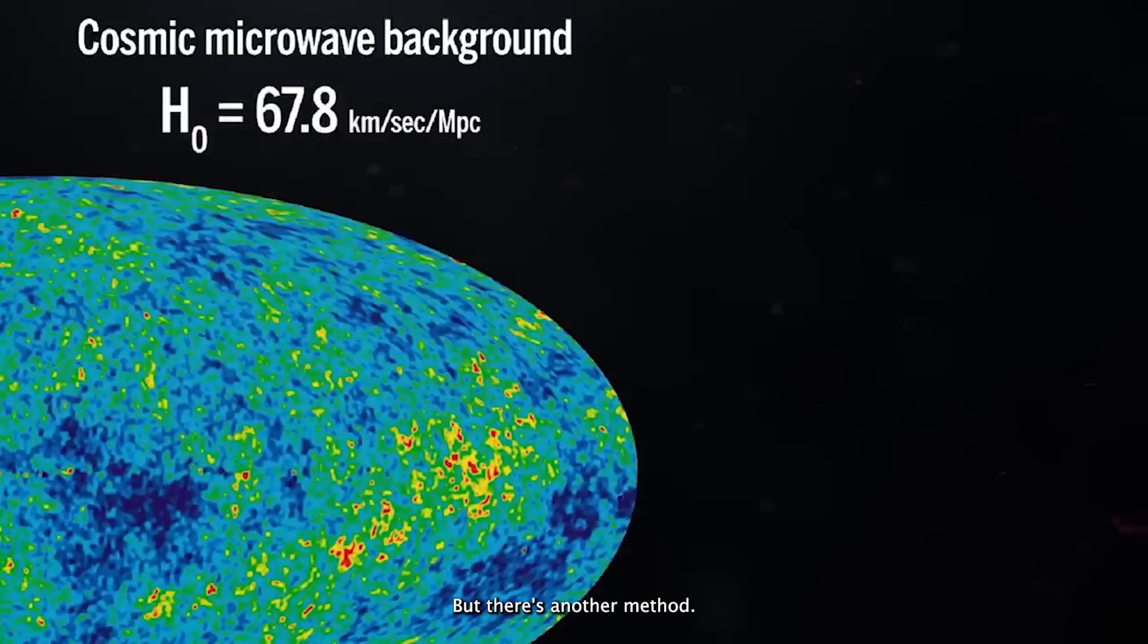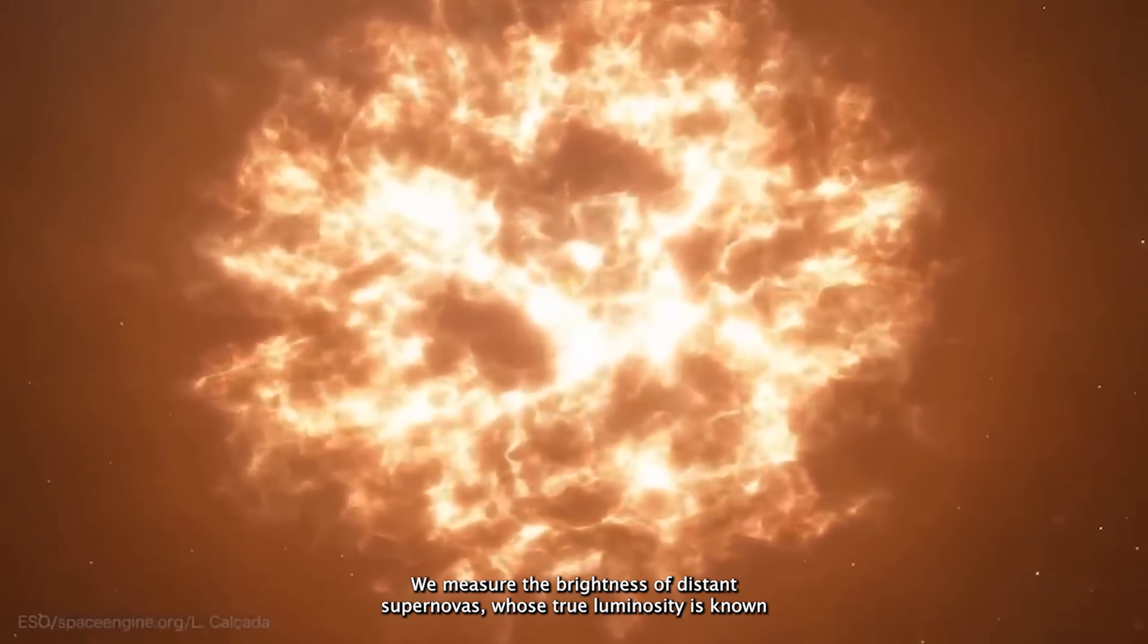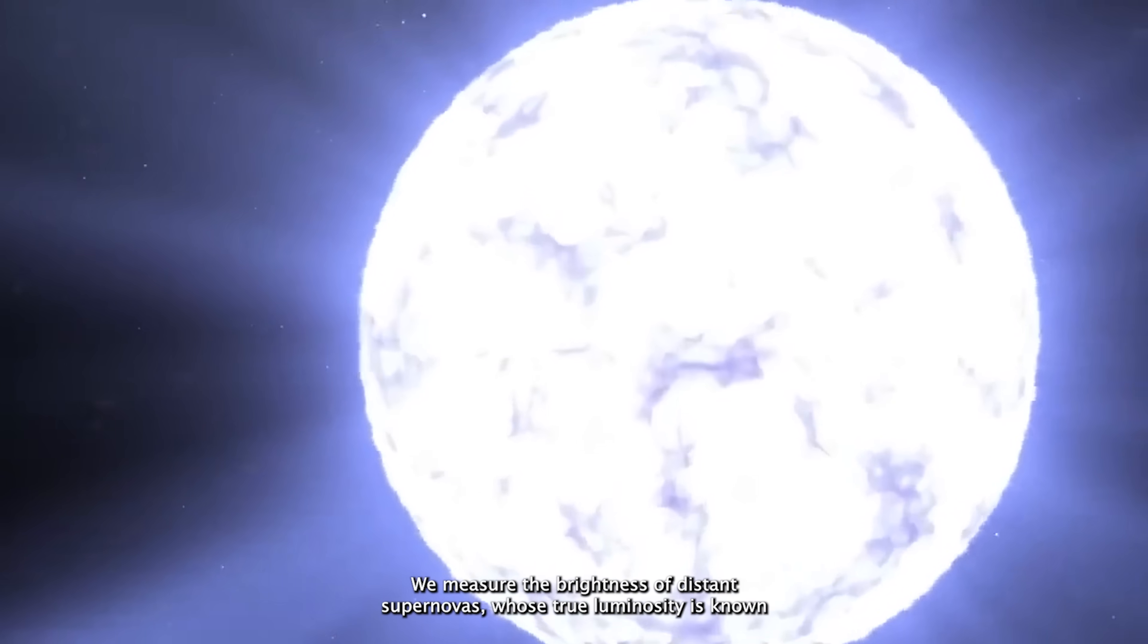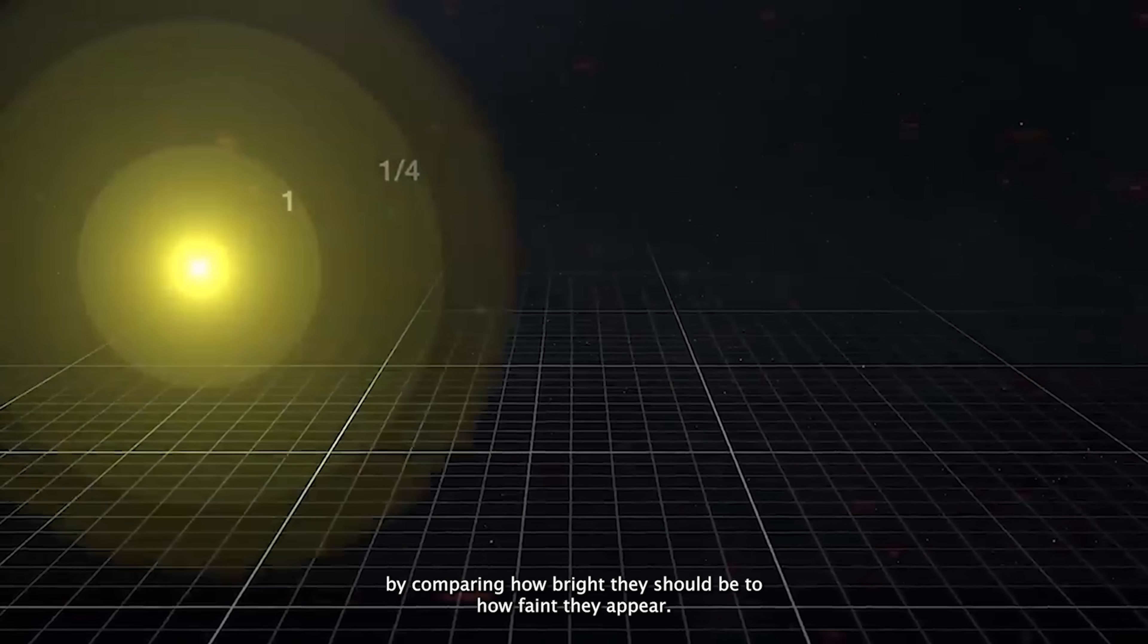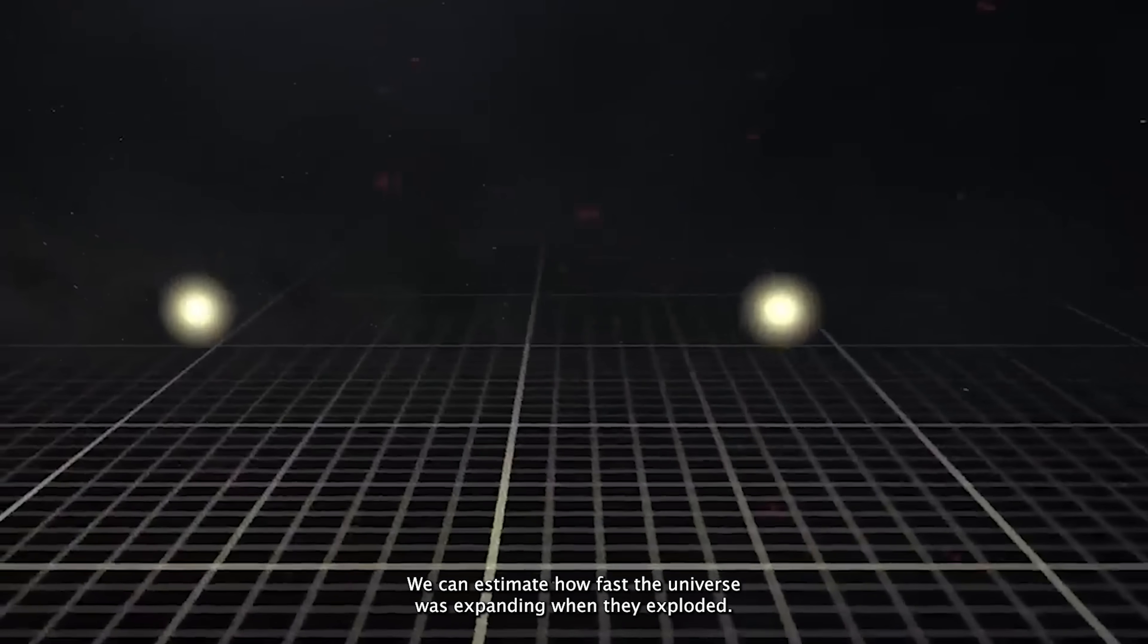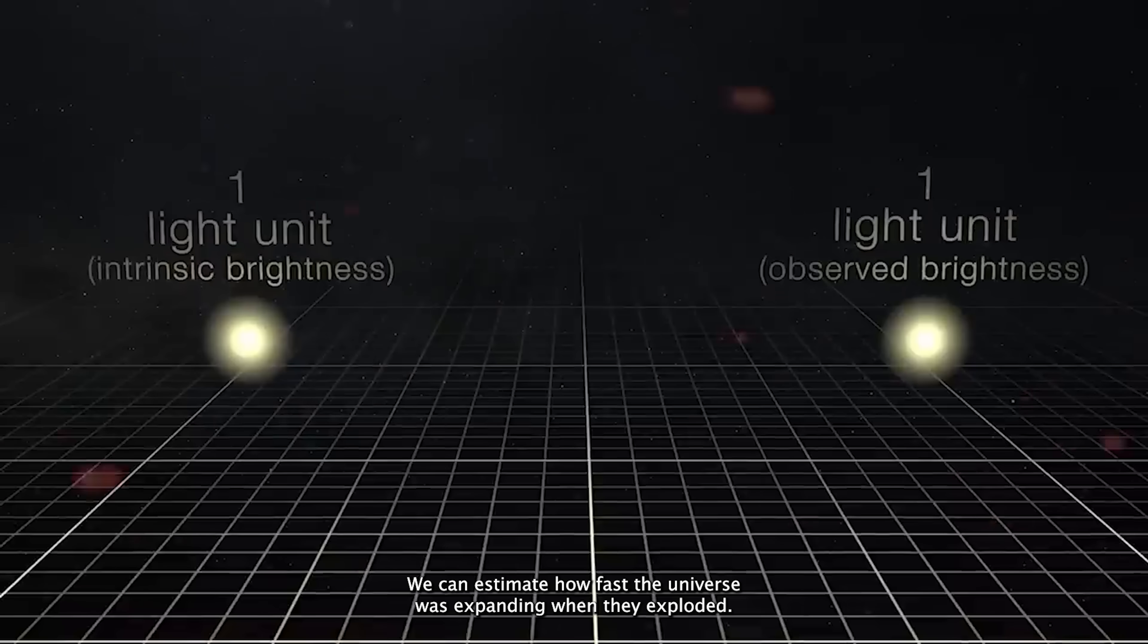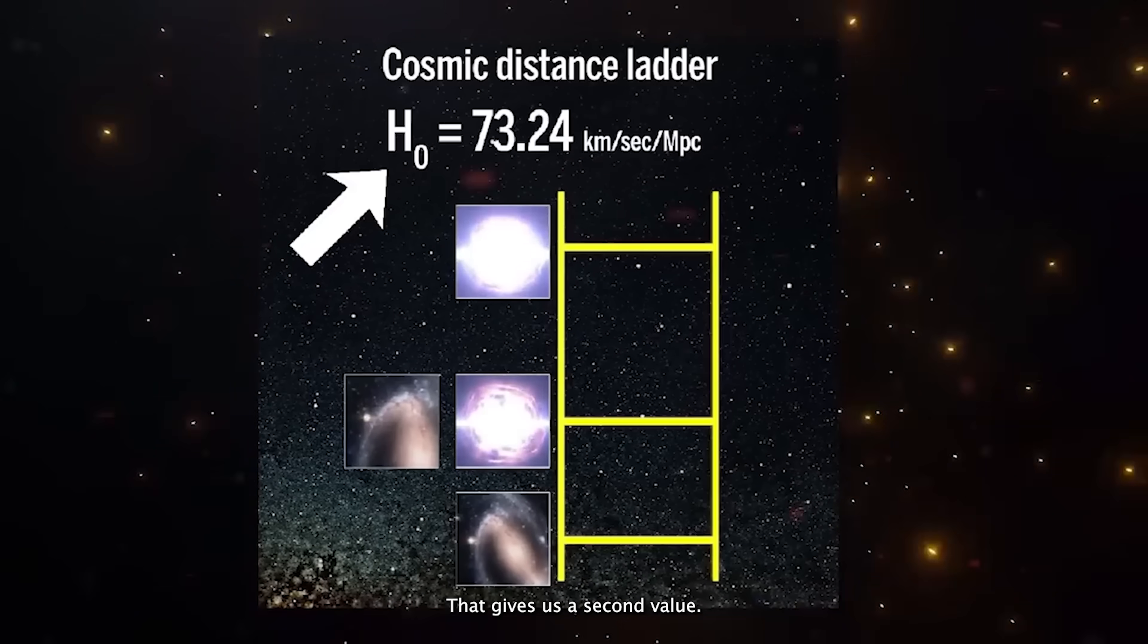But there's another method. We measure the brightness of distant supernovas whose true luminosity is known. By comparing how bright they should be to how faint they appear, we can estimate how fast the universe was expanding when they exploded. That gives us a second value.